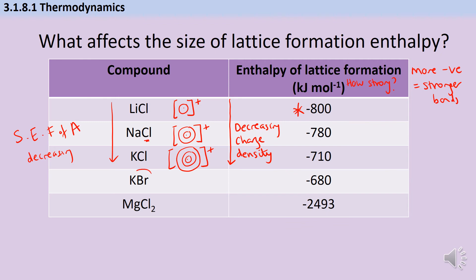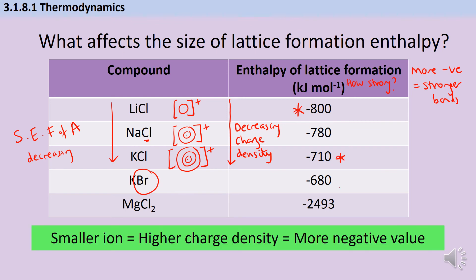This also applies if we look at our anions. A chloride ion is smaller than a bromide ion, and therefore it has a higher charge density, so it has a stronger electrostatic force of attraction between it and the potassium ions. Therefore potassium chloride is more exothermic than the value for potassium bromide. So, a smaller ion means a higher charge density and therefore a more negative value.